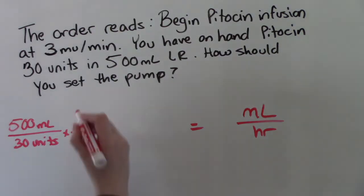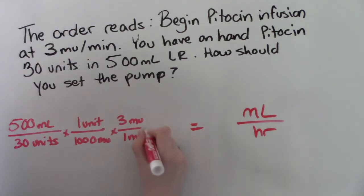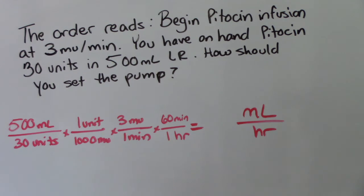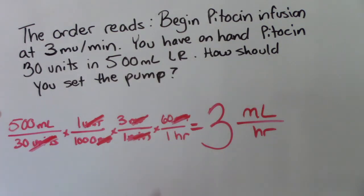We need our converting factor again. So one unit is 1000 milli units. And how many do we have? We have three per one minute. And then our last factor, we need to get to hours. So 60 minutes in one hour. So then we'll cross up our units, cross up our milli units, cross up our minutes. We'll get mLs on the top, hours on the bottom. We have to multiply and divide. So 500 times 1 times 3 times 60. And then divide that by 30 times 1000 times 1. And we get 3. 3 mLs per hour.